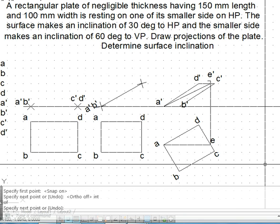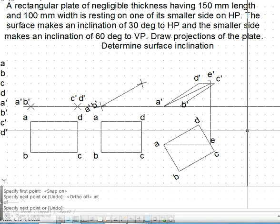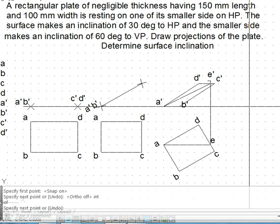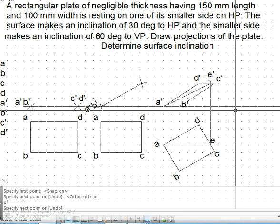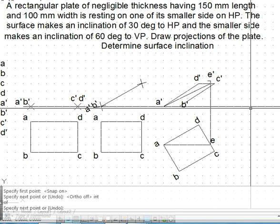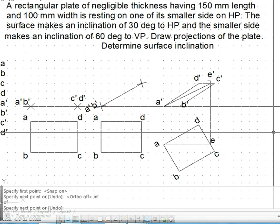After this, the procedure is A'E' should become perpendicular to XY line if we want the line view in top view. The front view true length should become perpendicular to XY line.